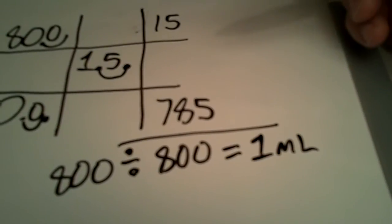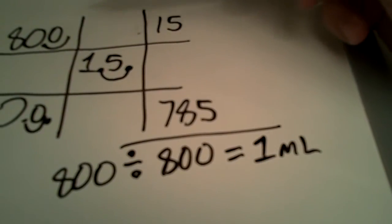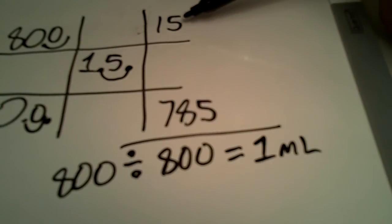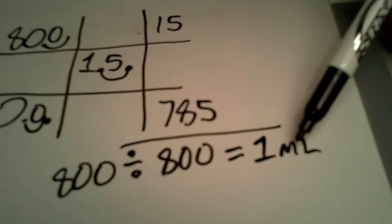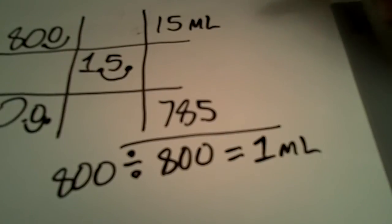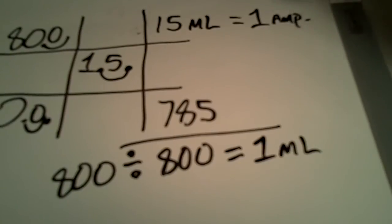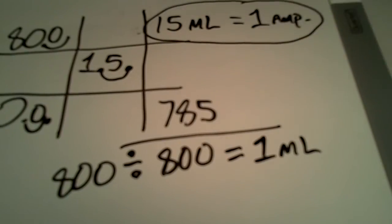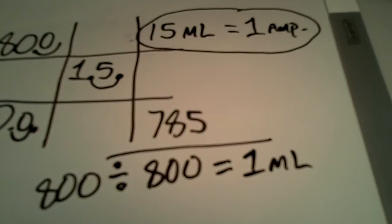So if we look at our 80% solution — those 15 milliliter ampoules — we need 15 parts. And if 1 milliliter equals each part, then 15 parts is 15 milliliters, which equals 1 ampoule. And that's actually the answer to the question right there.